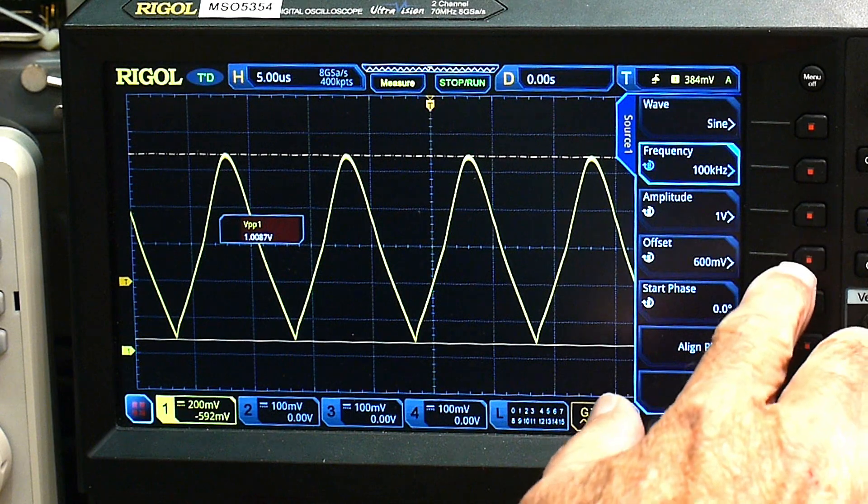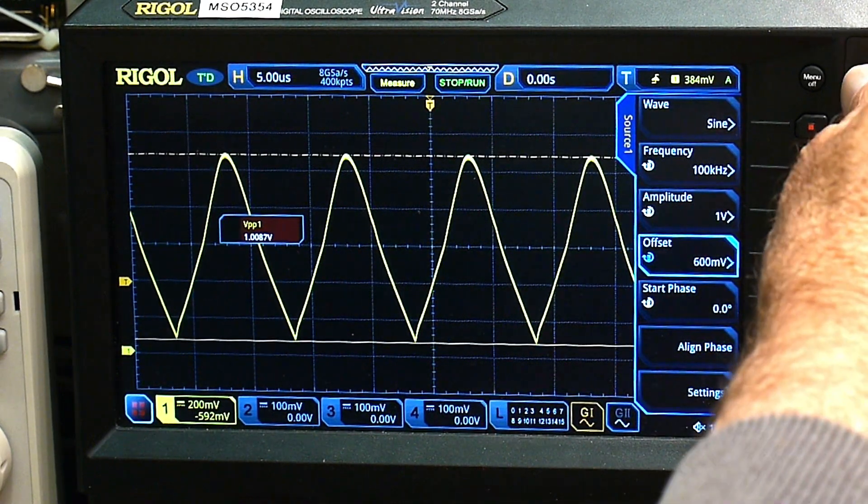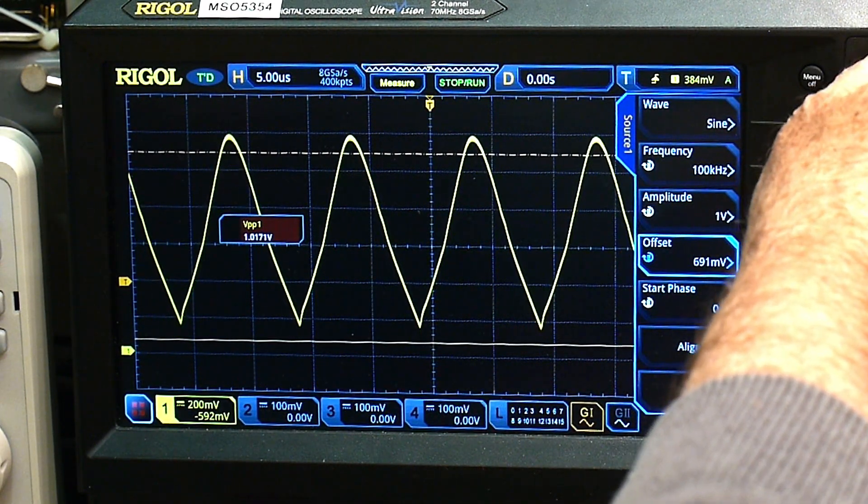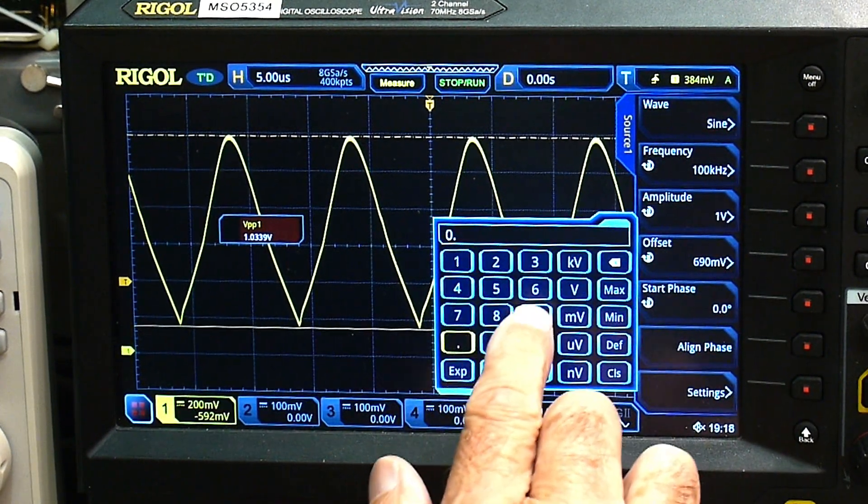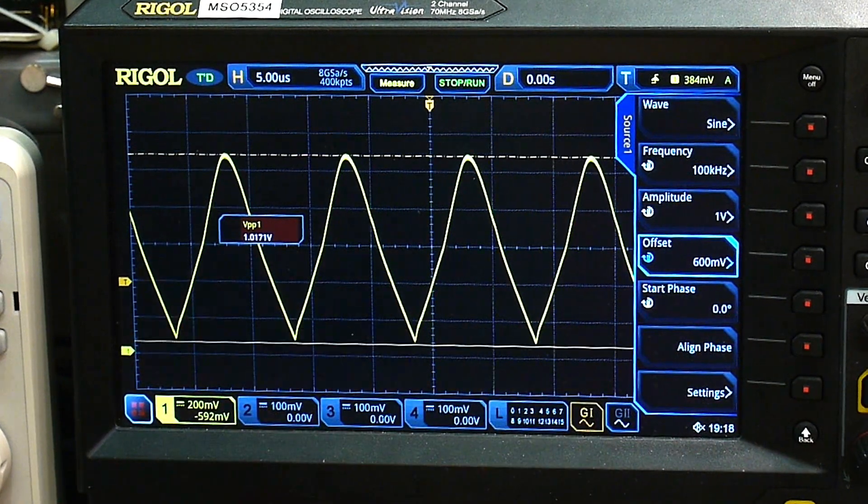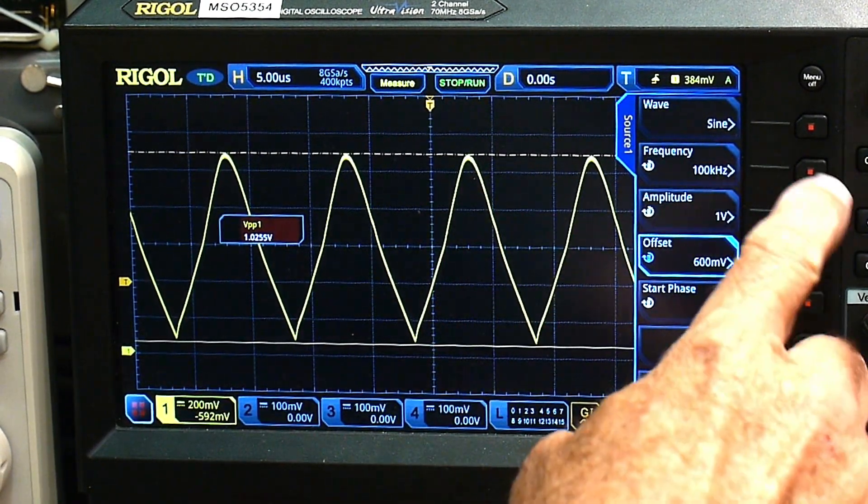We could take it up. I think we take the offset up a little bit and see if that helps. No, it doesn't help. Does not help. We'll put the offset back to 0.6 volts. All right. So we need to lower the frequency.